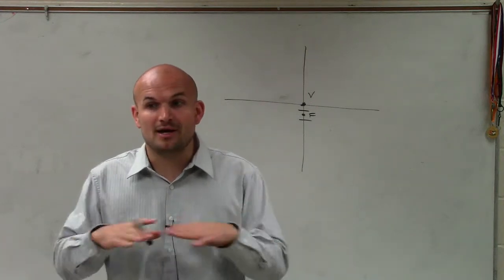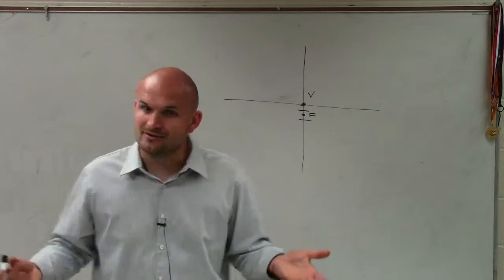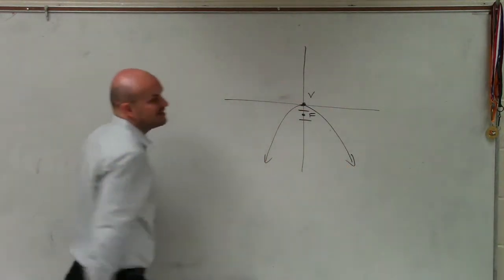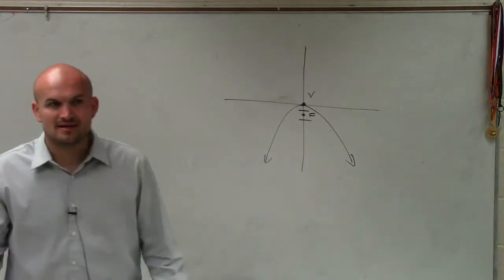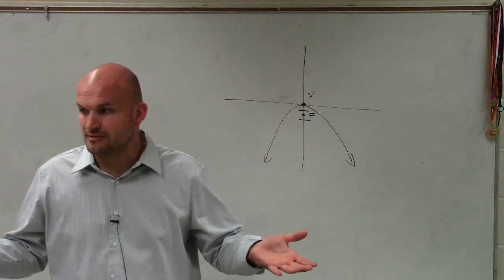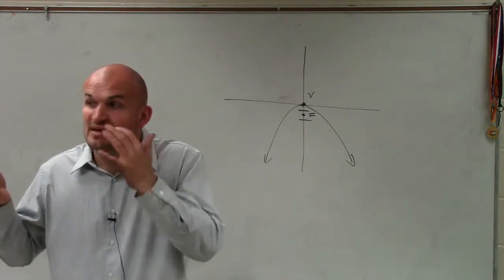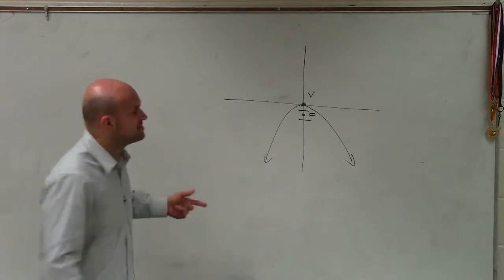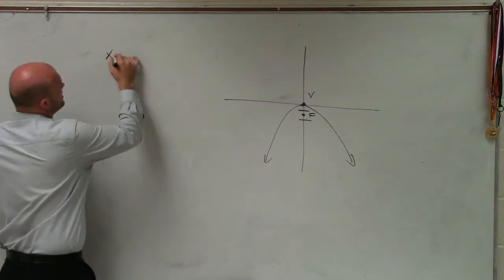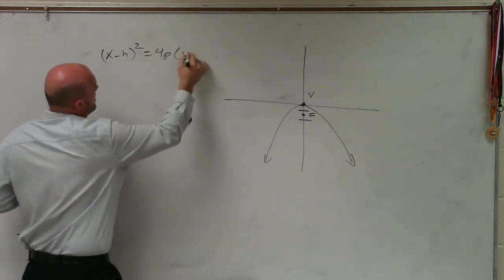So therefore, does our parabola have to face down, up, left, or right? Down. So now, since the parabola is going to take this shape, we can realize what formula we're going to use. We're going to use the one with x squared. We need to make sure that our p-value is going to be negative — remember, the p-value is the distance from your vertex to your focus. So I'll write the equation: x minus h squared equals 4p times y minus k.